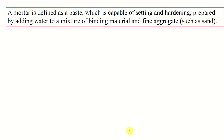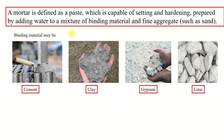A little introduction. The formal definition of mortar: it is a paste which is capable of setting and hardening, prepared by adding water to a mixture of binding material and fine aggregate. The binding material may be cement, clay, gypsum, lime, or a combination of these materials like clay gypsum, gypsum lime, and lime cement.